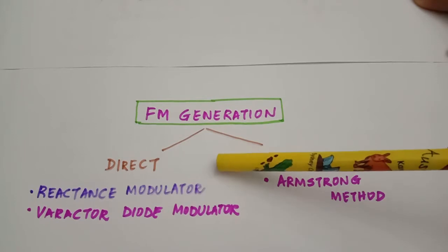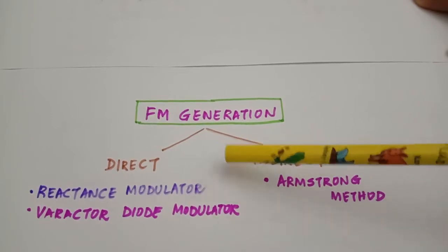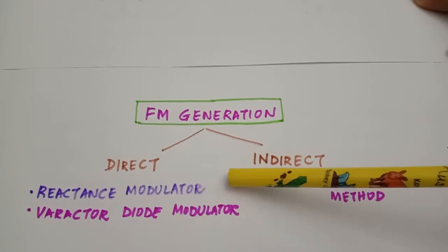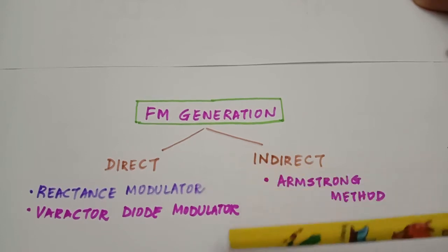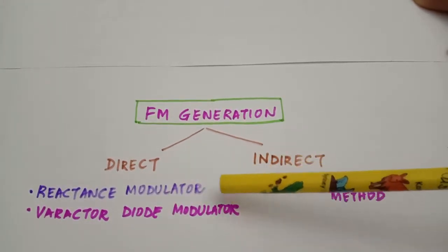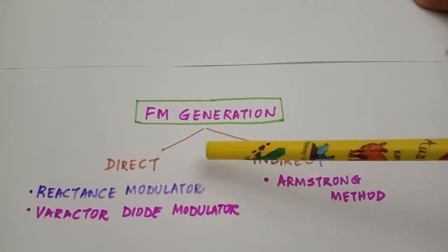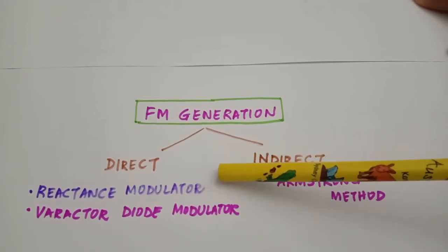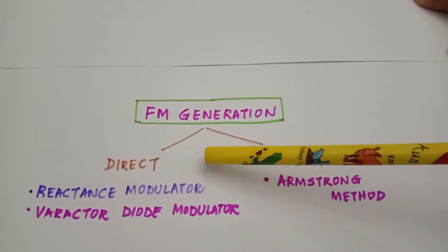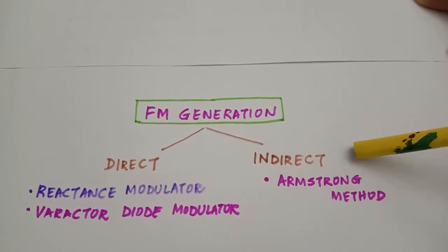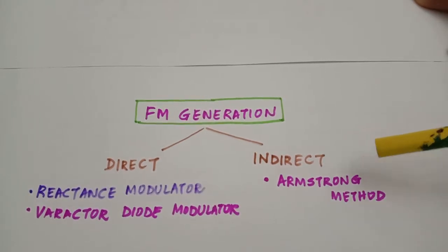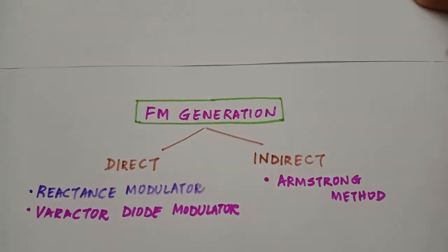One limitation of the direct method is that it uses an LC oscillator as its master oscillator, and LC oscillators are susceptible to frequency drifts. So for circuits using these LC oscillators it is required to have some additional circuitry like the automatic frequency control circuit in order to take care of these drifts. For commercial FM transmitters it is always desirable to go for the indirect technique of FM generation. In this session we will be discussing the Armstrong method for generating FM modulated wave.